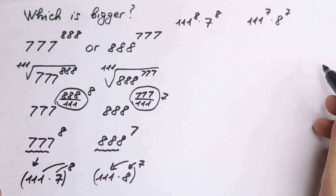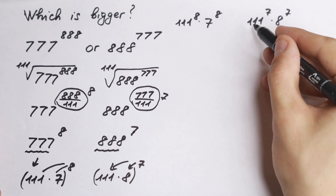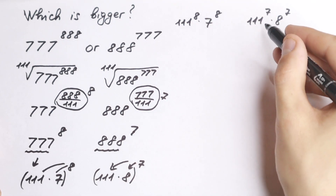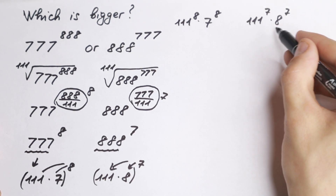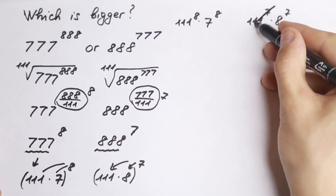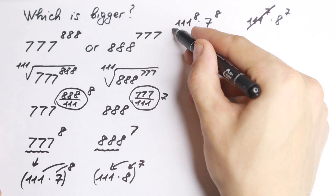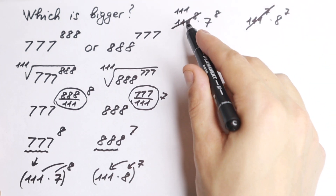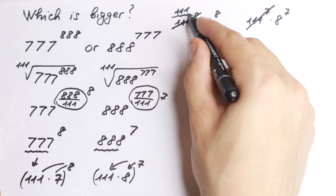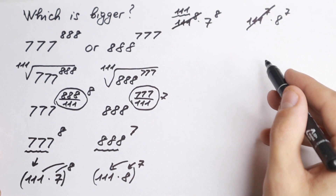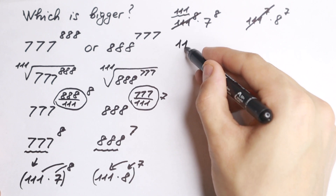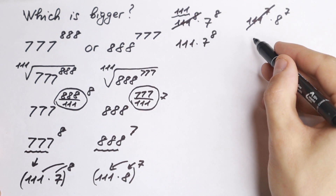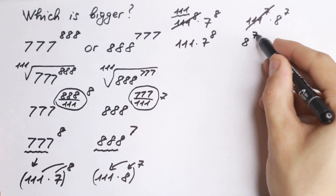Now we can see that both sides share a factor of 111 to the 7th. On the left we have 111 to the 8th and on the right 111 to the 7th, so we can cancel the 111 to the 7th from both sides. We still have one extra factor of 111 on the left. As a result, we are comparing 111 times 7 to the 8th on the left versus 8 to the 7th on the right.